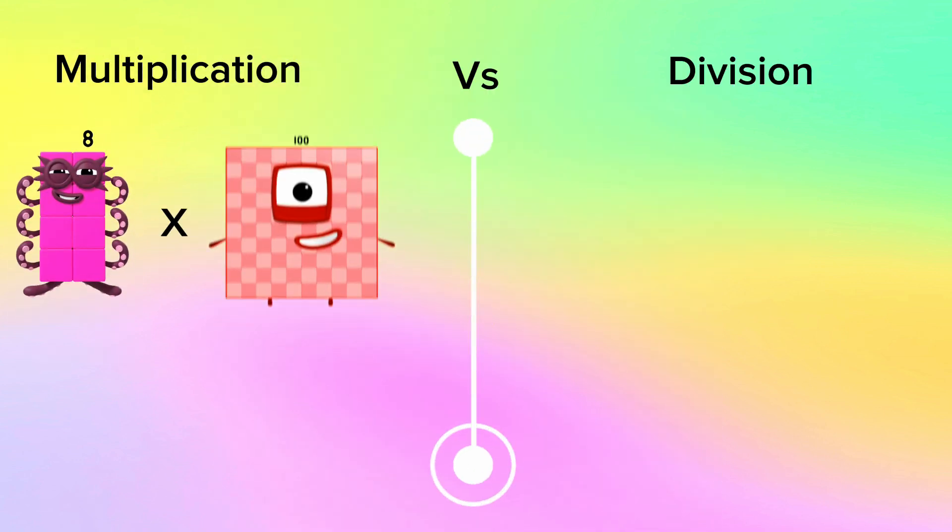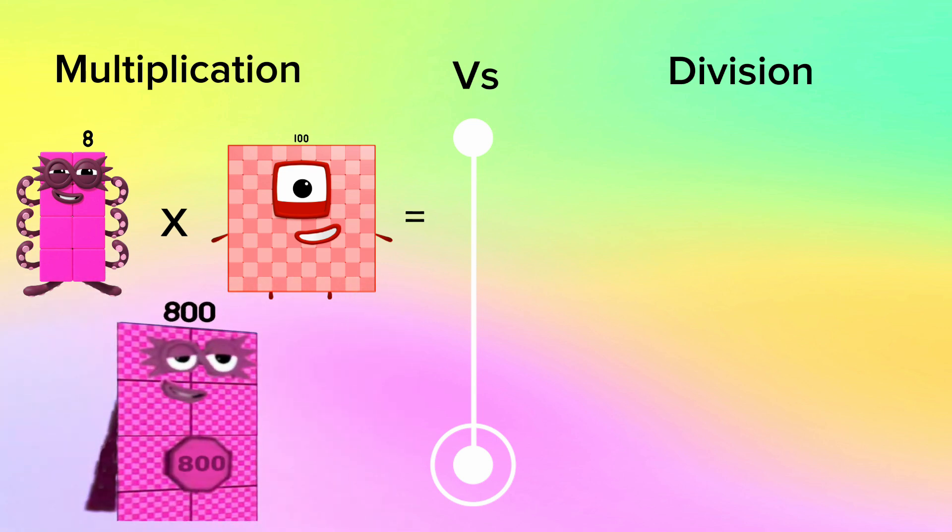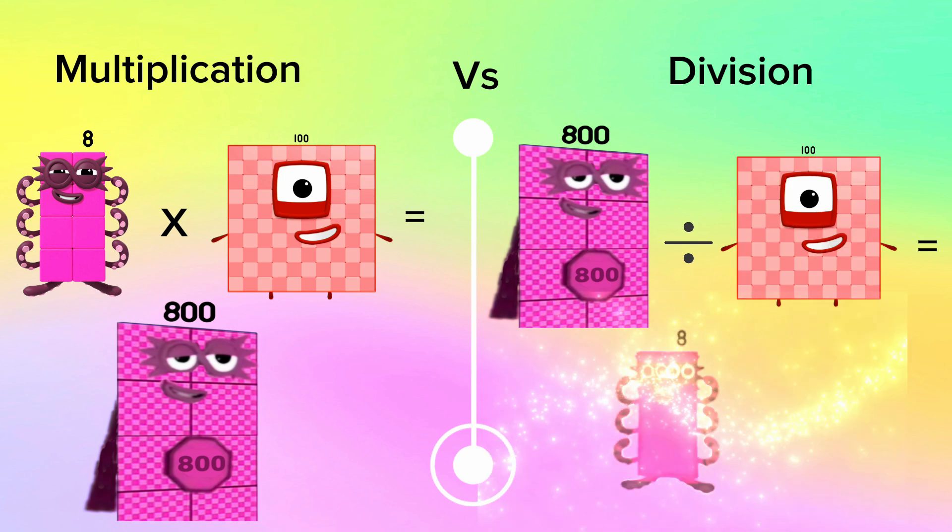8 multiplied by 100 is equals to 800. Let's compare it to division. 800 divided by 100 is equals to 8.